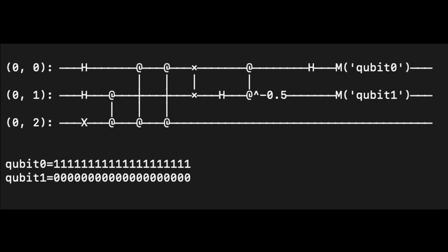This is the circuit schematic for a certain case of quantum phase estimation where our unitary matrix being repeatedly applied is the Z gate, or the Z matrix, which is essentially a 2x2 matrix with diagonal entries of 1 and negative 1.